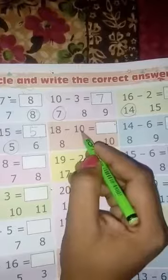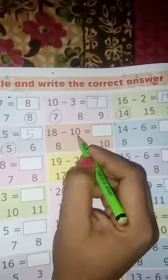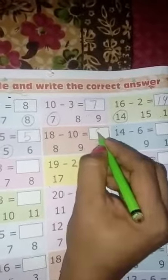Next, 18 minus 10. 18 mein se 10 chala gaya, to kya ho gaya? 8. Who is the right answer? 8, 9, 10. 8 is the right answer, circle the 8.